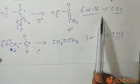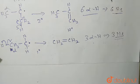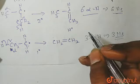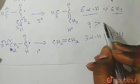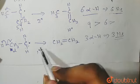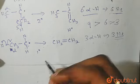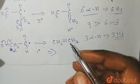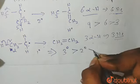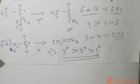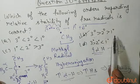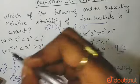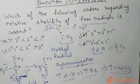So: tertiary had nine hyperconjugating structures, secondary had six, and primary had three. The more the hyperconjugating structures, the more the stability. Therefore, tertiary radical is more stable than secondary, which is more stable than primary. This gives us the stability order, and your correct answer is option B.